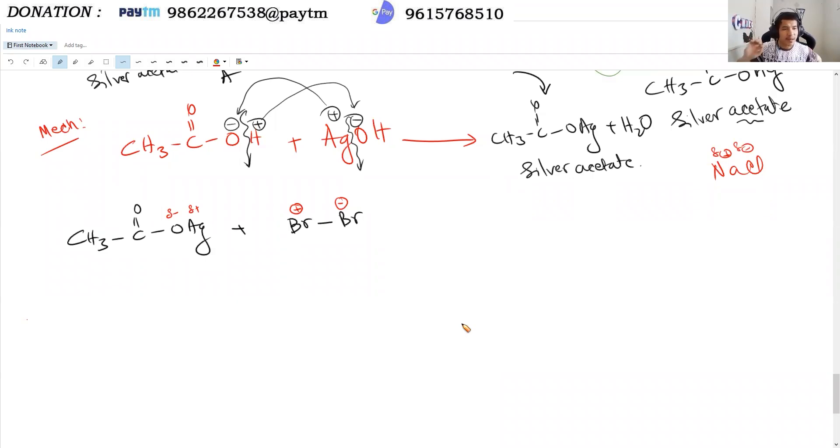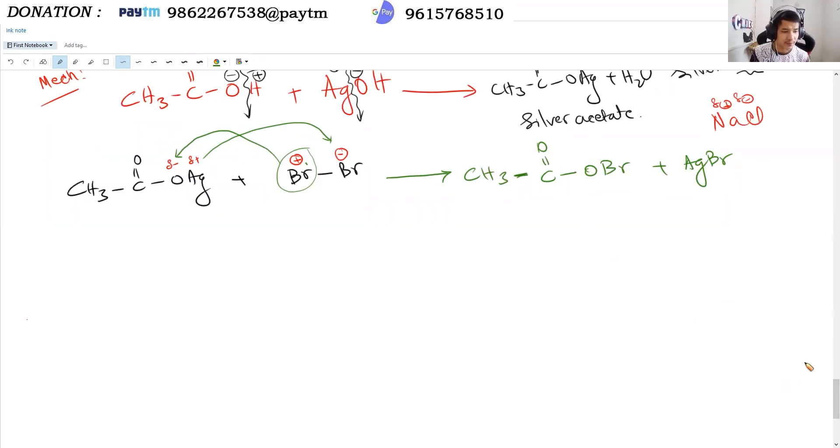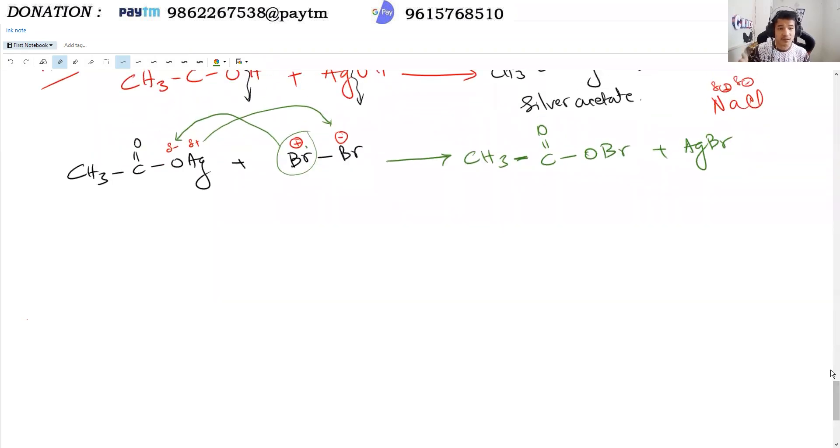The polarization allows radicals to form. With homolytic cleavage, the acetyl radical forms. The bromine radical (Br•) forms, and the acetyl group has the radical. This leads to CH3C=O-O• plus Br•.